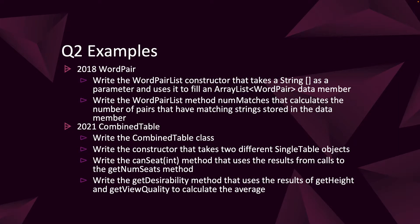In Q2, looking at 2018 and 2021 for examples. In 2018, we had the word pair question. We had a WordPairList class that we were writing, and we wrote the constructor which took a String array as a parameter. We'd iterate over the String array to create an ArrayList of WordPair objects — WordPair being a class supplied as part of the question. Then we wrote the numMatches method that would calculate how many matches of pairs existed in that ArrayList data member we created in the constructor.